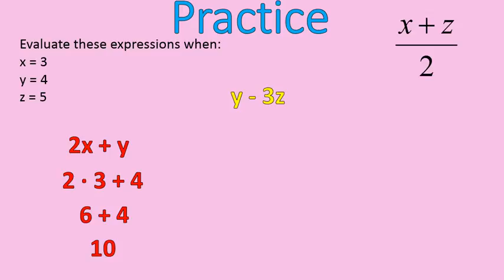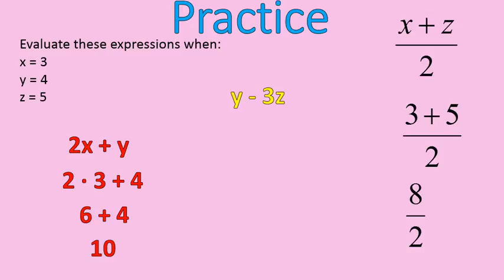Now let's look at the fraction expression: x plus z divided by 2. Substitute x equals 3 and z equals 5, so it becomes 3 plus 5 over 2, or 8 over 2, which gives us 4. In this case we did not do division before addition — we added first. That's because this is a fraction bar, which means you do everything on the top first, everything on the bottom simplified, and then the division at the end. That's the correct order of operations.